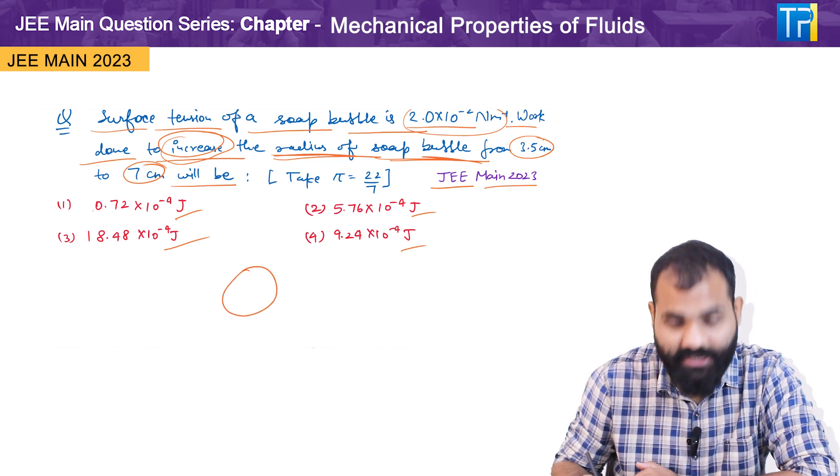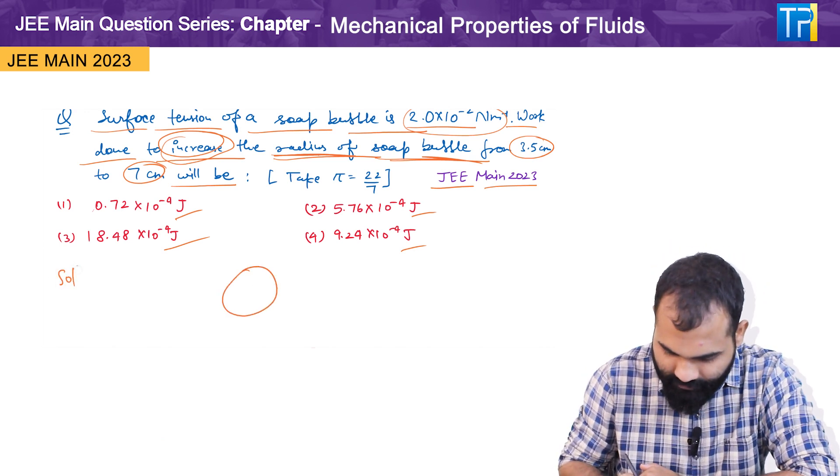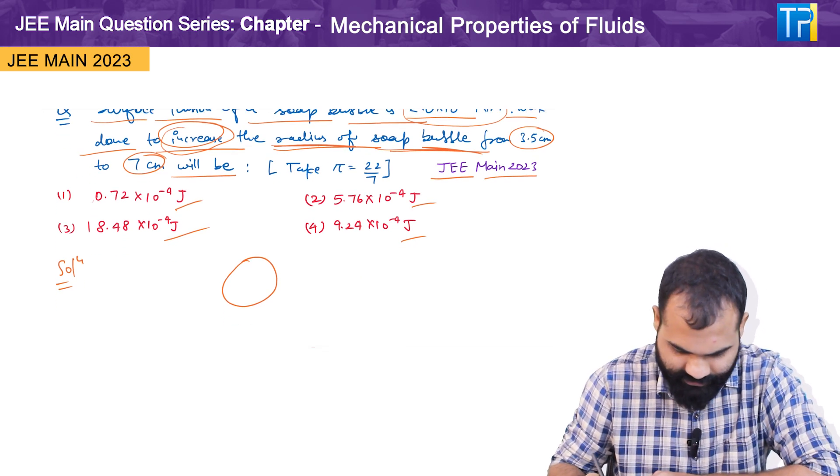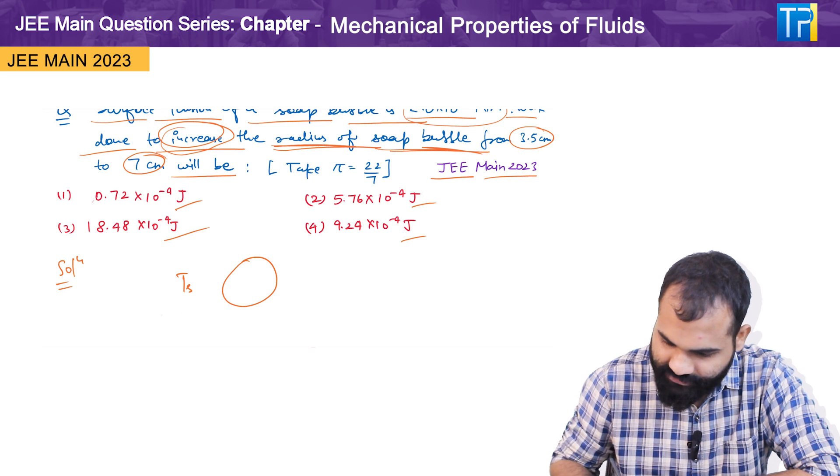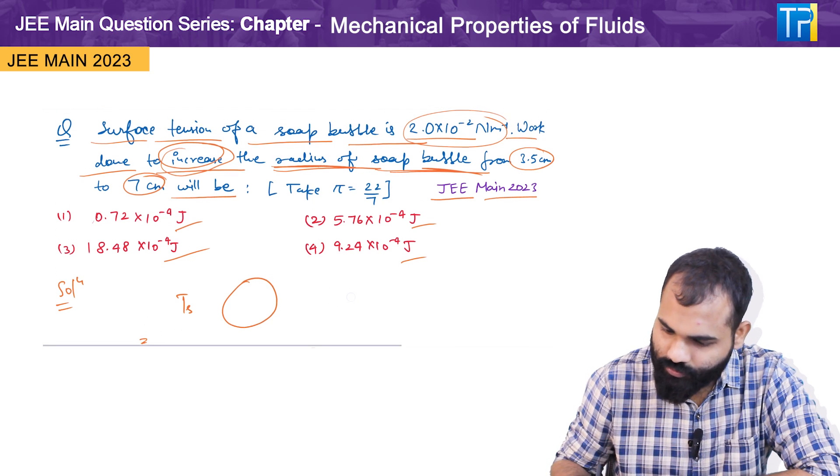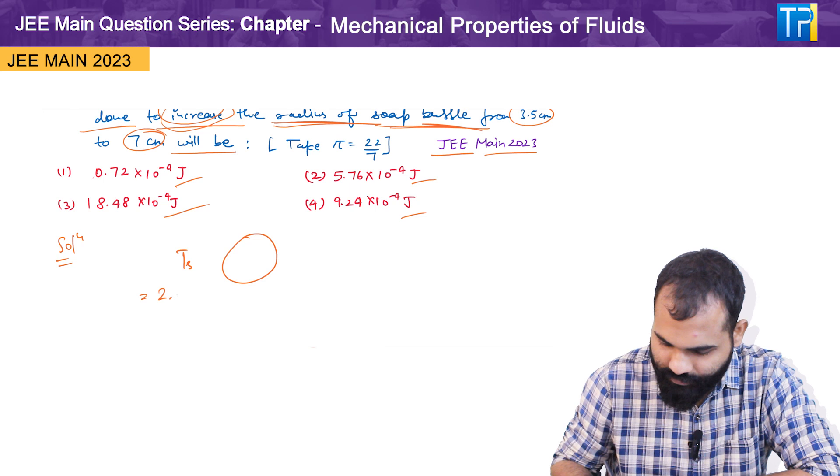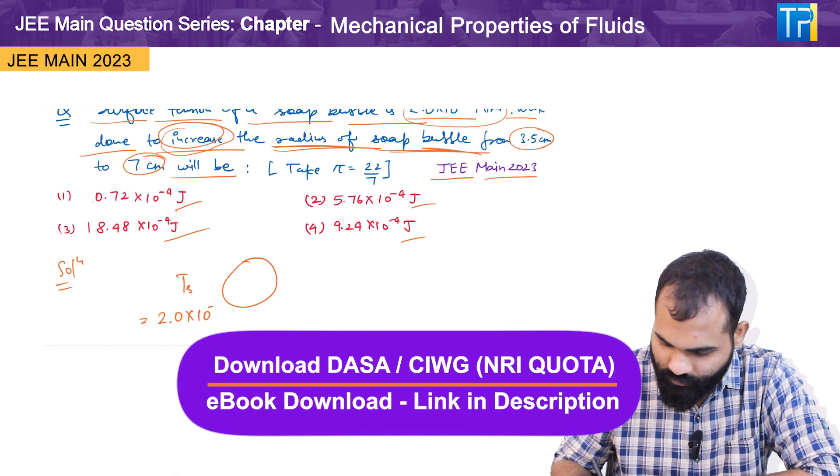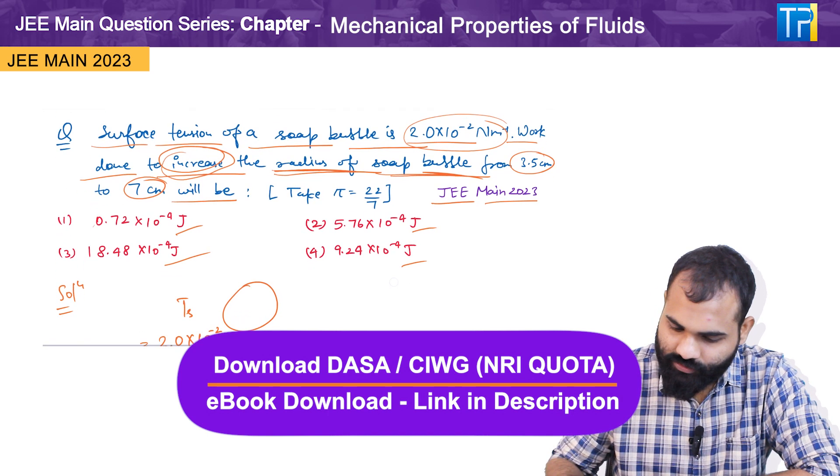The question is, let us say we have a soap bubble. The surface tension which is given here, let us say the value of surface tension is 2.0 into 10 raised to power minus 2 Newton per meter. So at its initial phase the radius of the bubble is 3.5 centimeter.